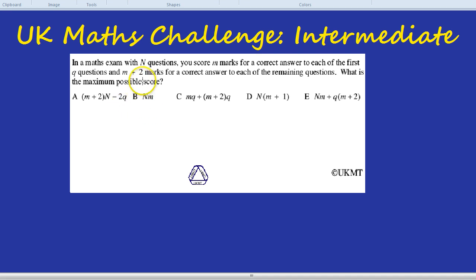In a maths exam with N questions you score M marks for a correct answer to each of the first Q questions and M plus 2 marks for a correct answer to each of the remaining questions. What is the maximum possible score?